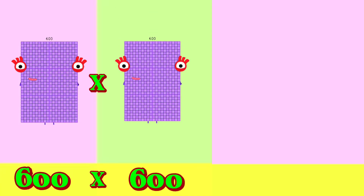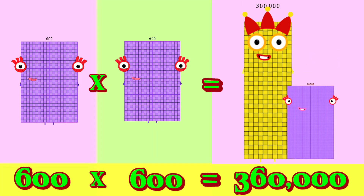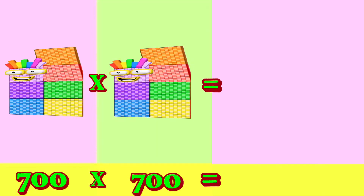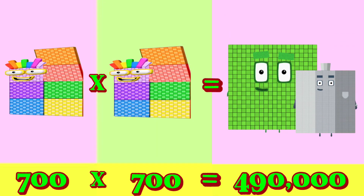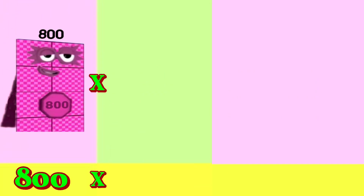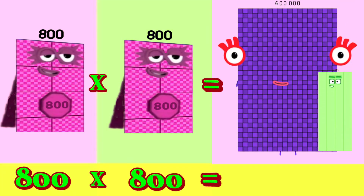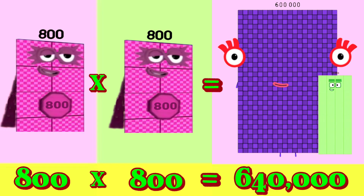600 multiply by 600 is equals to 360,000. 700 multiply by 700 is equals to 490,000. 800 multiply by 800 is equals to 640,000.